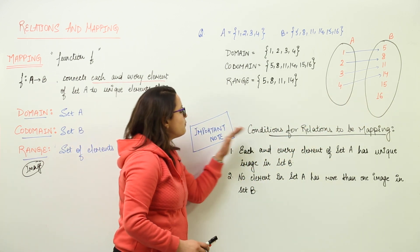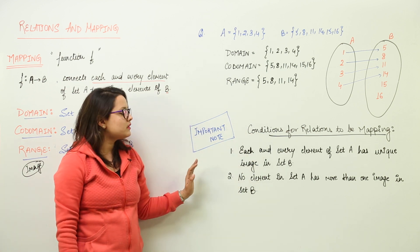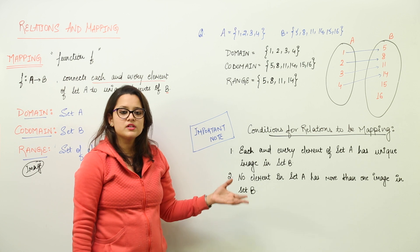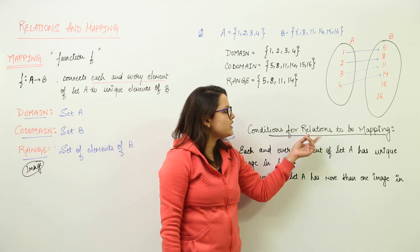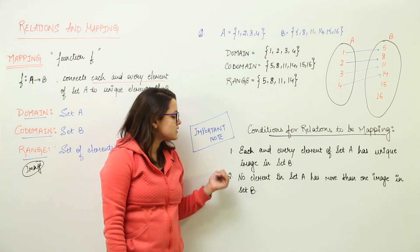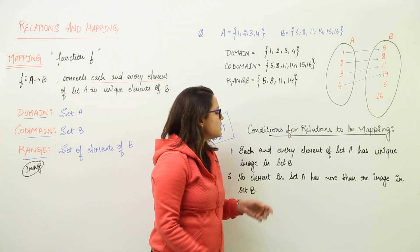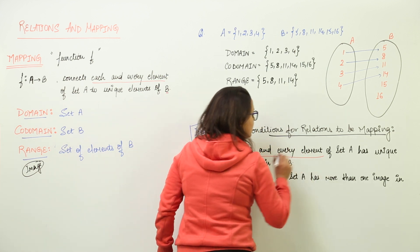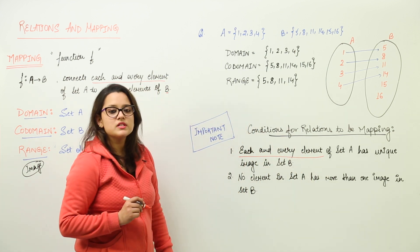Now, important note. Please keep it in mind when you are doing the mapping and relations. That is, the conditions for relations to be mapping. Relations can be mapped only on these conditions. The first condition is that each and every element of set A has unique image in set B.